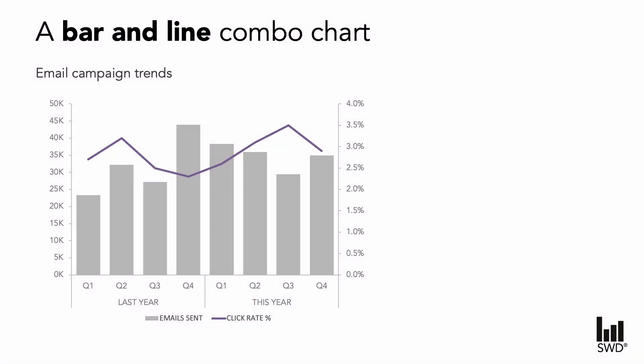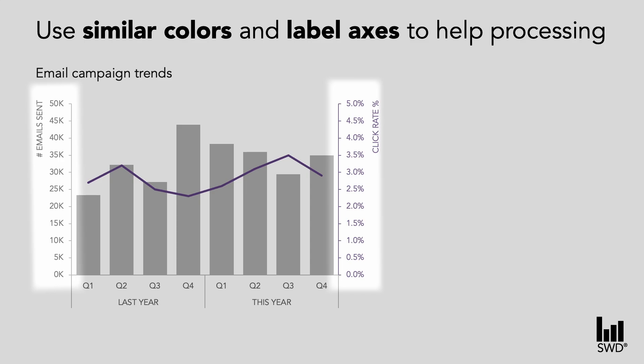In this example we are looking at a classic bar and line combo. The chart title tells us we are looking at some email related metrics and we can see we have two vertical axes. The first challenge is that it just takes longer to process. In addition to all the typical visual processing we need to do, we also need to spend time orientating ourselves to which data relates to which axis — valuable time that our audience likely doesn't have. If we must use a dual axis then we can help our audience with considerate labeling and formatting of our axes.